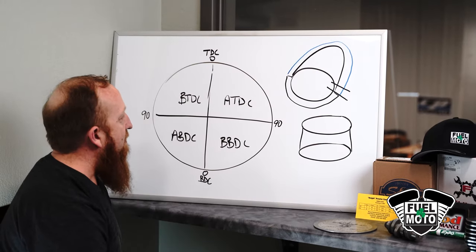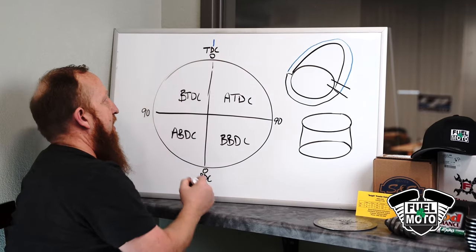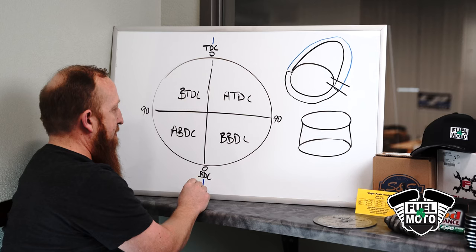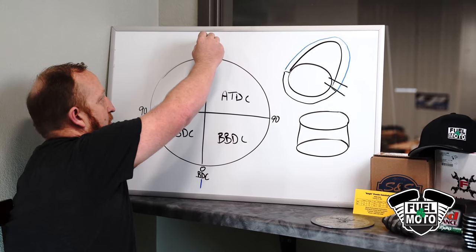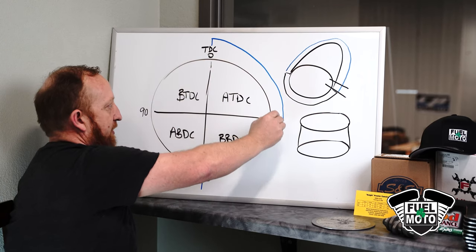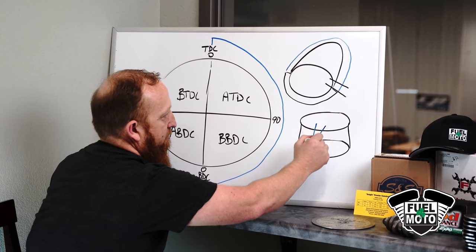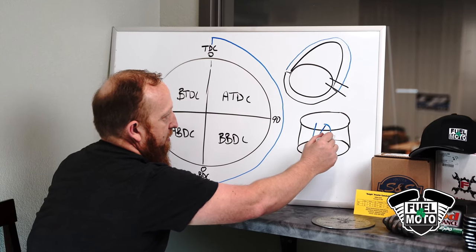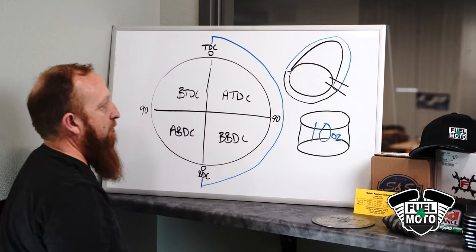We'll start out with the intake valve. Now if your intake valve opened at top dead center and closed at bottom dead center, your cylinder volume could be filled 100% effective, and we'll call your cylinder volume 10 ounces, just as a simple reference.